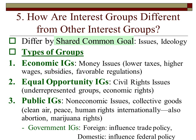How are interest groups different? They differ by their shared common goal — different issues and different ideologies. The National Rifle Association cares about gun control and gun safety, whereas the NAACP cares about other particular issues. There are also different types of interest groups.